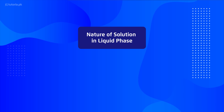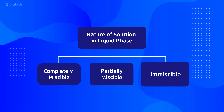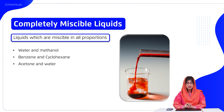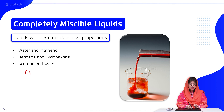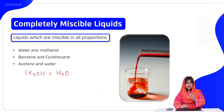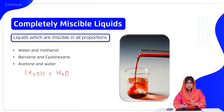Moving forward, based upon the nature of the solution, we have liquid phase solutions. There are three types: completely miscible, partially miscible, and completely immiscible. Completely miscible liquids mix in all proportions. For example, water and methanol — they build hydrogen bonding interactions and form a completely miscible, uniform composition solution. Similarly, benzene and cyclohexane interact through London dispersion forces.